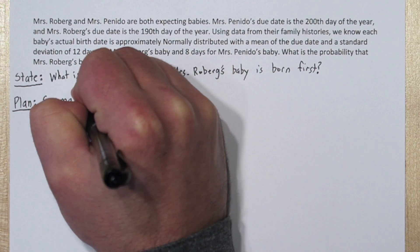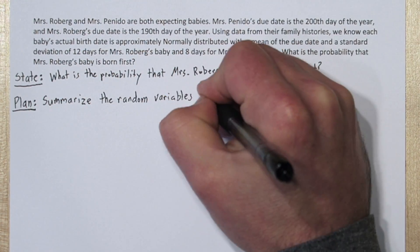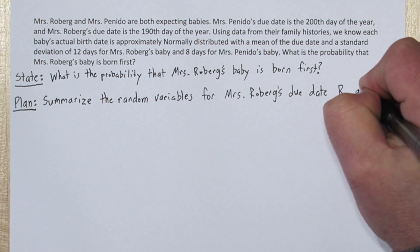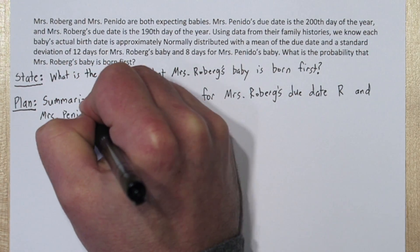Now we need a plan. We're going to start by summarizing the random variables for Mrs. Roberg's due date, which we'll call R, and Ms. Peneto's due date, which we'll call P.